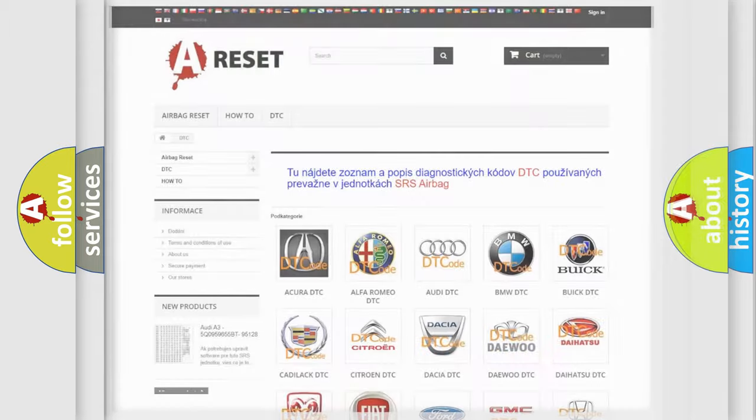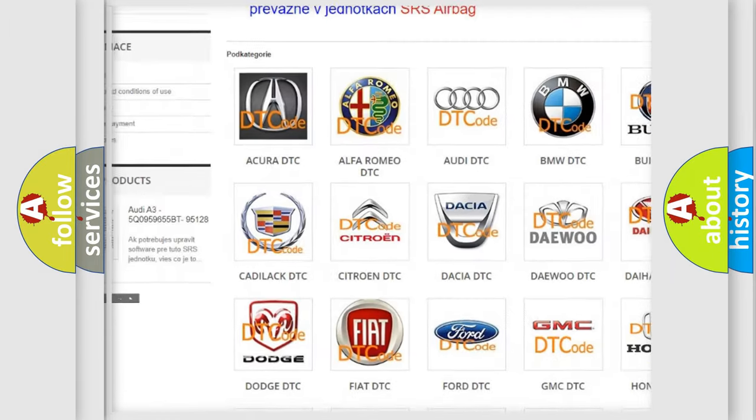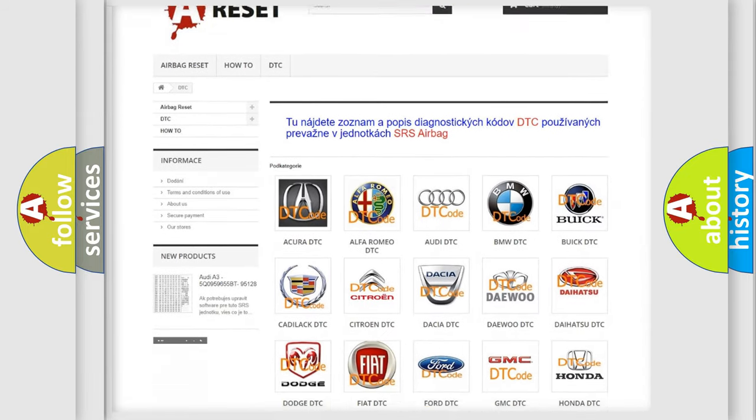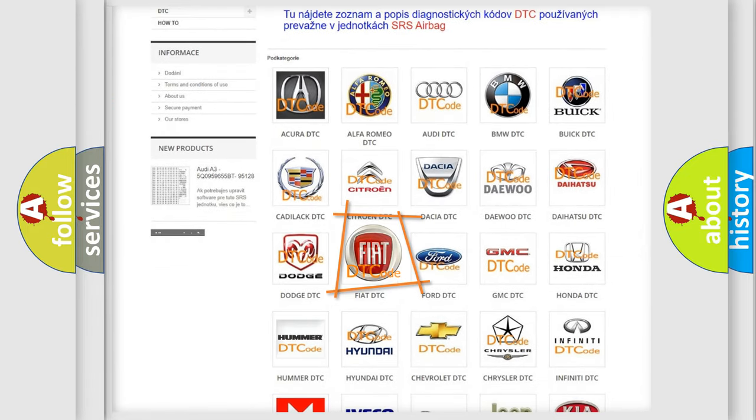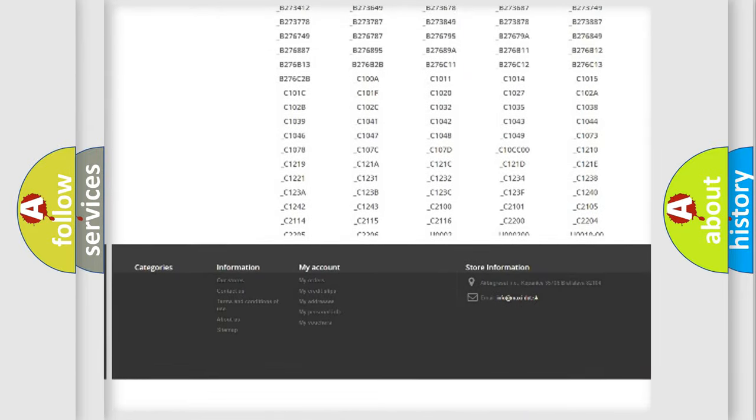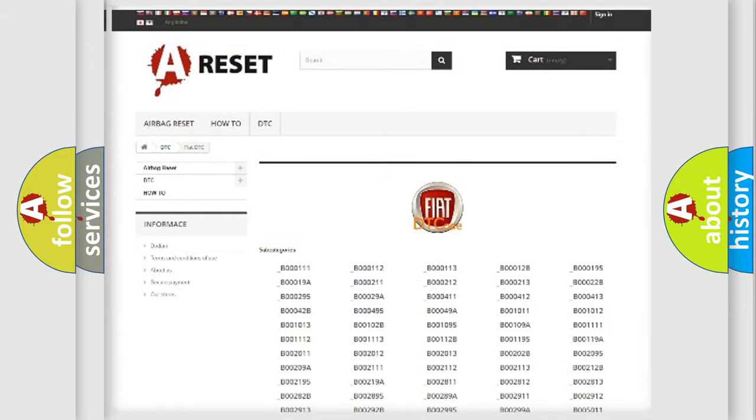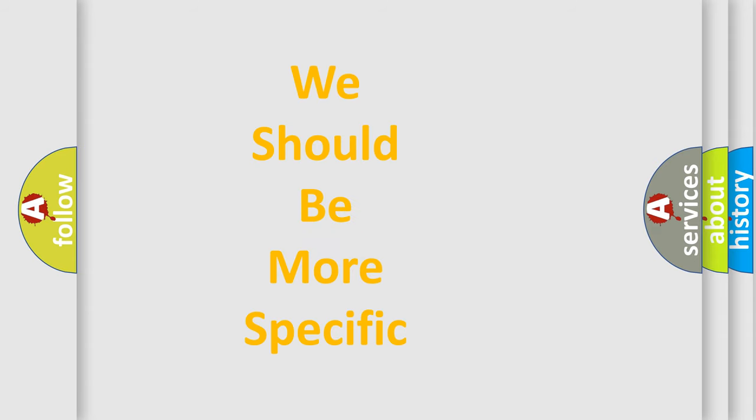Our website airbagreset.sk produces useful videos for you. You do not have to go through the OBD2 protocol anymore to know how to troubleshoot any car breakdown. You will find all the diagnostic codes that can be diagnosed in Fiat vehicles, also many other useful things. The following demonstration will help you look into the world of software for car control units. You can move the video a bit further.